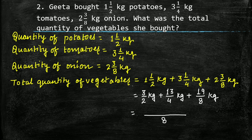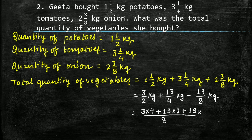Write 8 as the common denominator. In the first fraction denominator is 2, so we have to multiply this fraction by 4. In the next fraction denominator is 4, so we have to multiply this fraction by 2, giving 13 multiplied by 2. In the last fraction denominator is already 8, so write its numerator as it is.